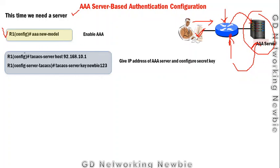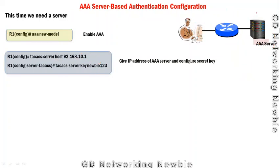To configure the TACACS+ server, go to global configuration mode and specify the server's IP address. A shared key — for example `newbie123` — is defined on both the router and the server. This shared key secures the communication between the router and the TACACS+ server.